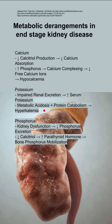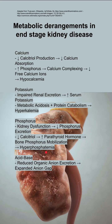For phosphorus, in kidney dysfunction you have decreased phosphorus excretion. The decreased calcitriol also results in increased parathyroid hormone, which can lead to more bone phosphorus mobilization. All of these contribute to hyperphosphatemia.